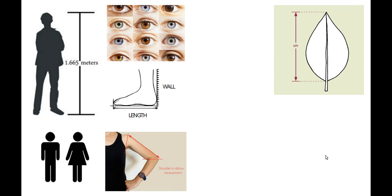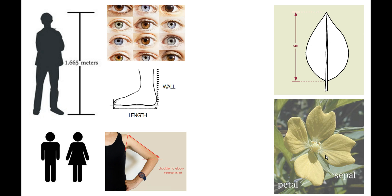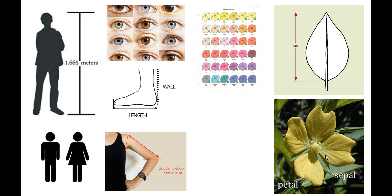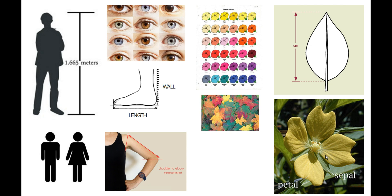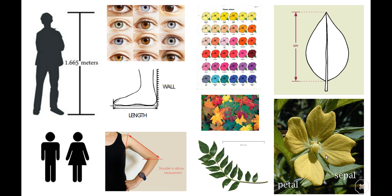For the plant species, characteristics we can look at include the length of leaves, the colour of the petals, the length of the petals, the length of the sepals, the flower colour, the colour of the leaves, and the number of leaves in a particular section of a branch. You can choose any characteristics of plants you would like, but those are the ones we will look at when doing our first-hand investigation in class. And that brings us to the end of this video. Thank you for watching.